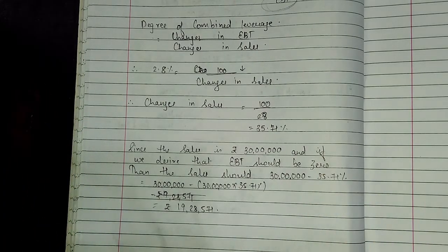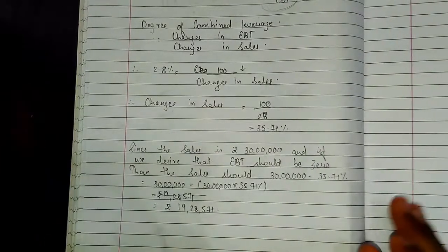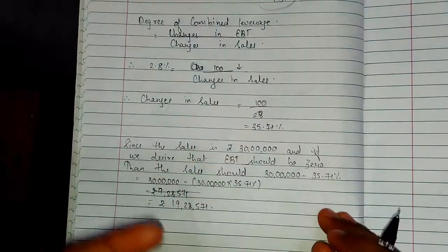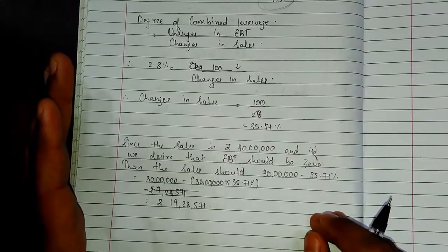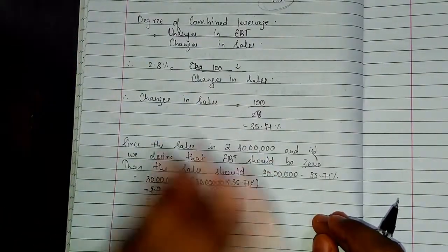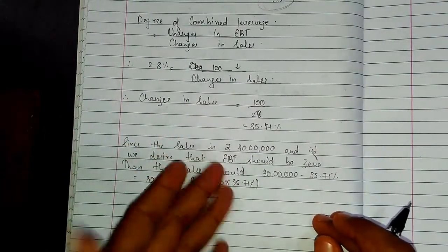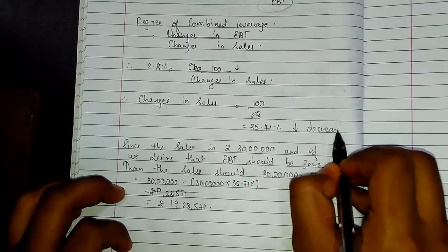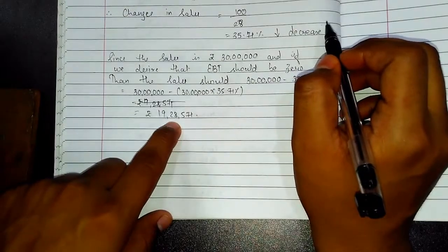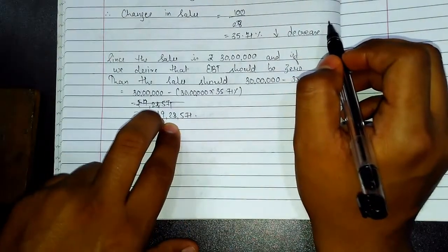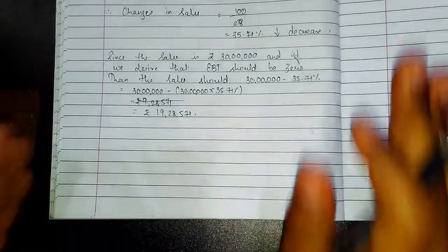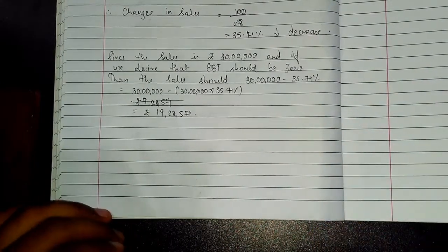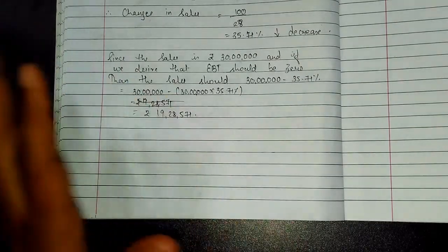I hope this was quite simple to understand because already when I was teaching you the theory of combined leverage, I have already illustrated this type of sum. I hope you have understood the changes in sale is 35.71, it is decreased. The sales have decreased from 30 lakhs to 19 lakhs 28,571. This was the type of tough and difficult sum which would come in exam. One more sum will solve and after that this chapter is going to get winded up.